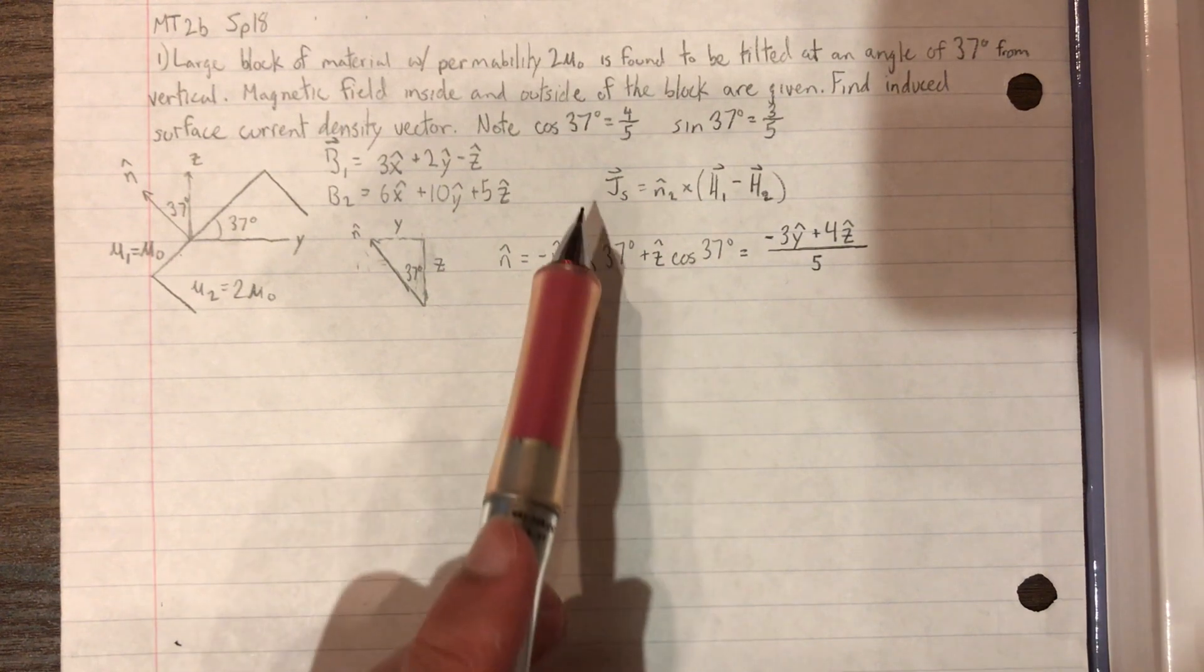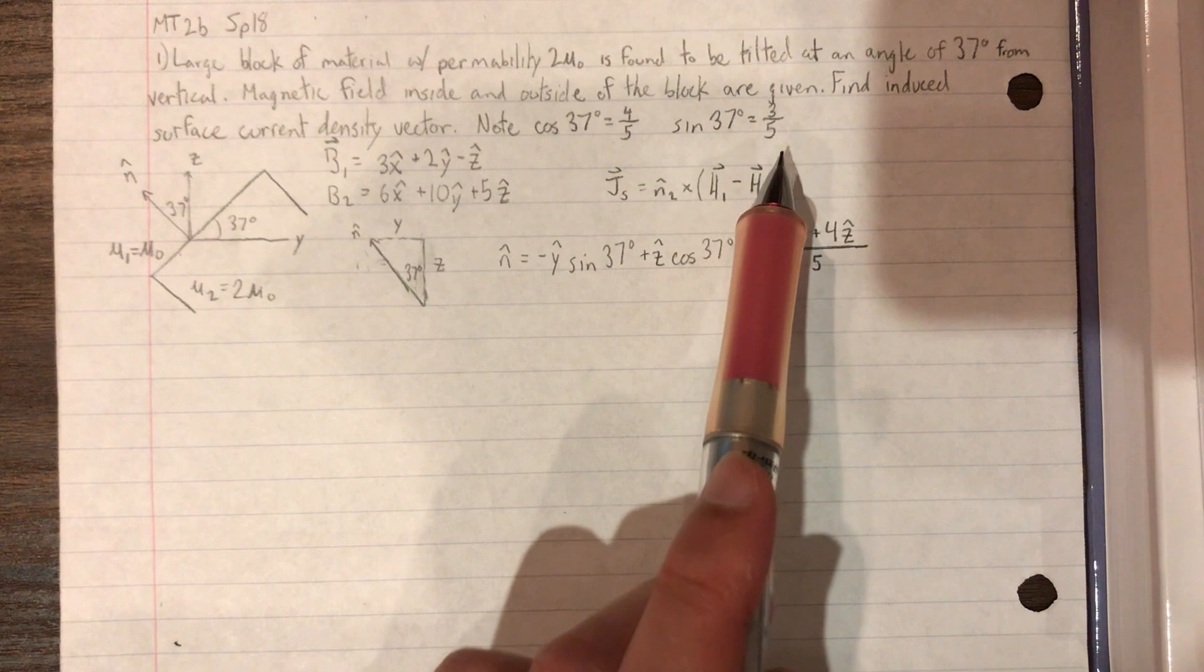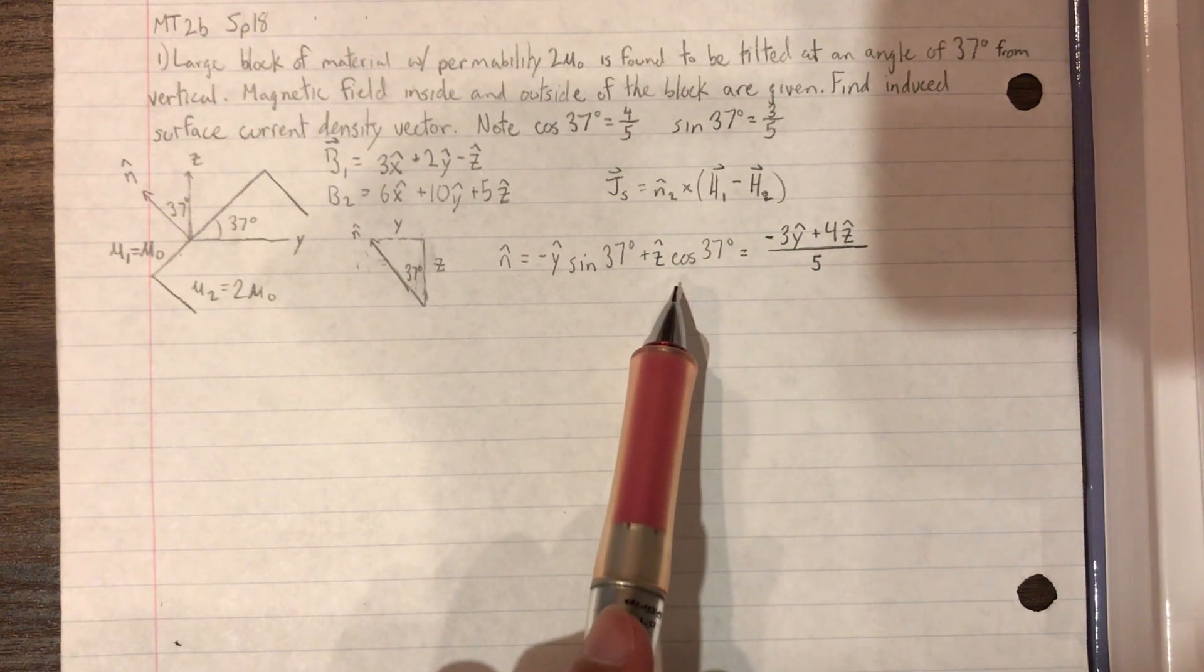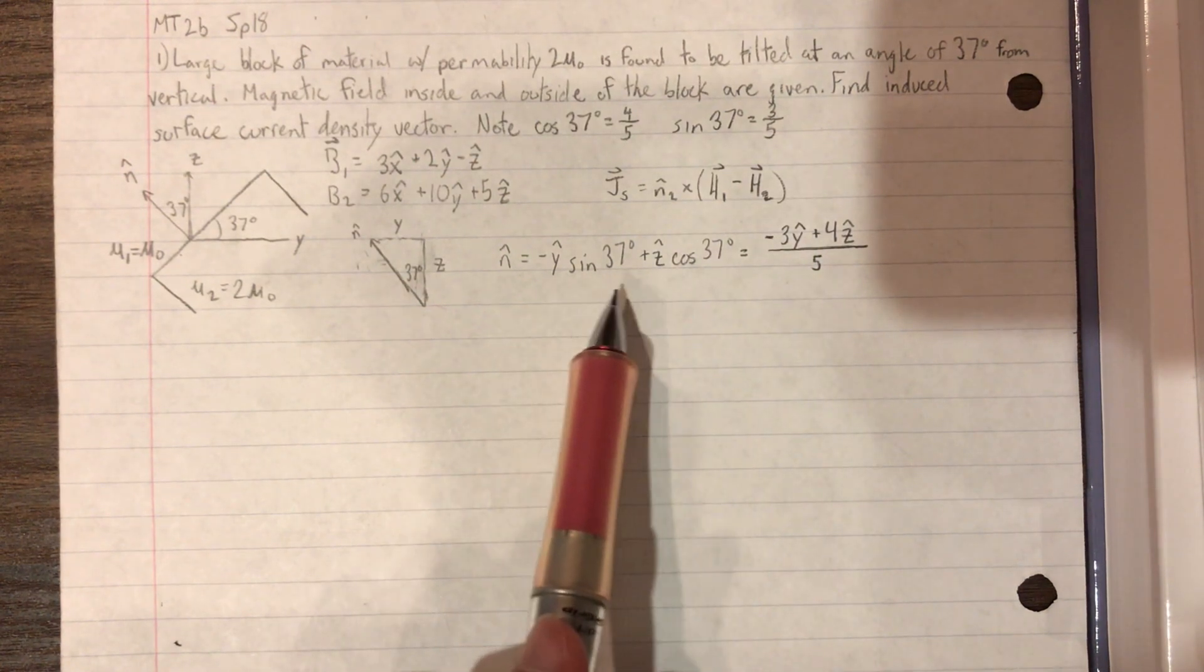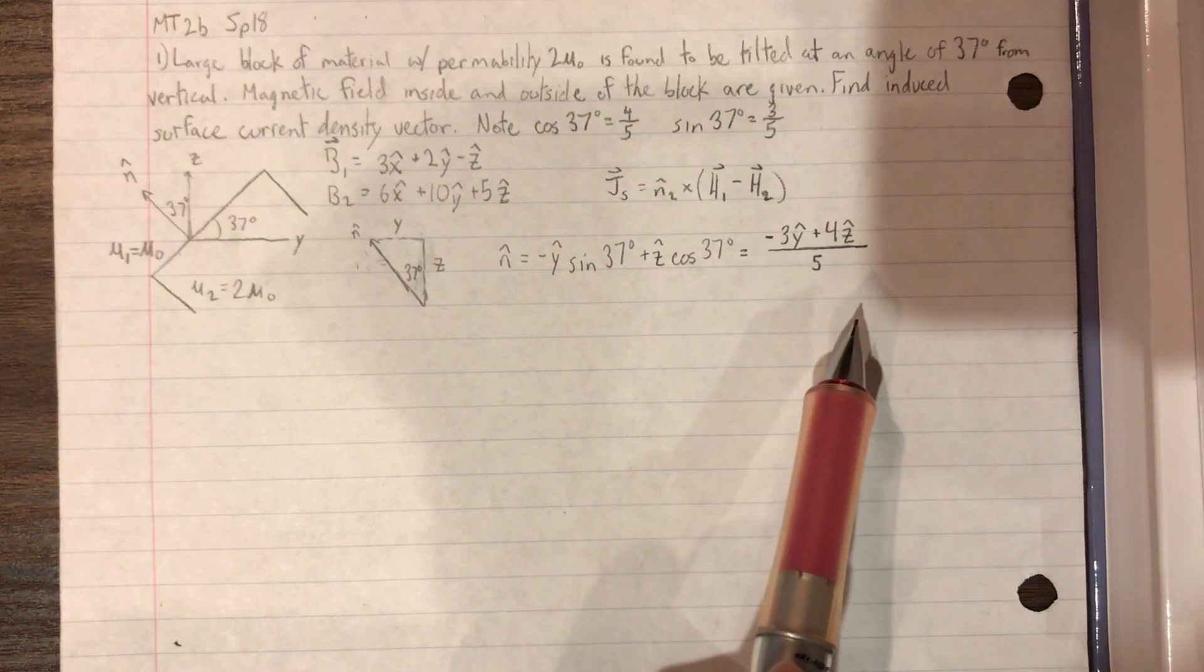And from the note, cosine 37 equals 4 fifths, and sine 37 equals 3 fifths. We can simplify our N hat to be negative 3 Y hat plus 4 Z hat over 5.